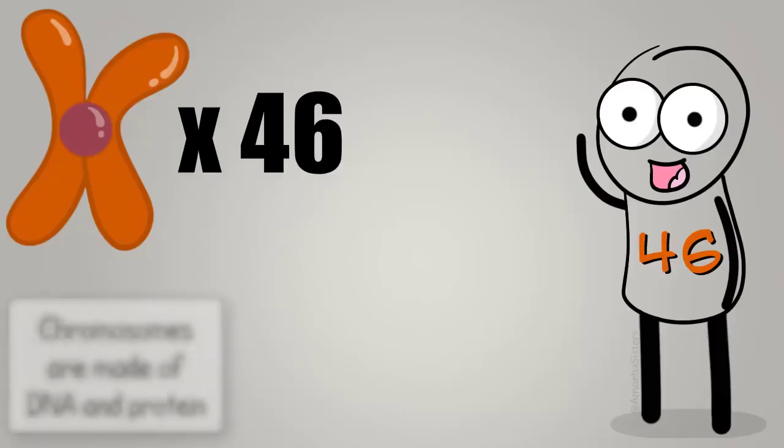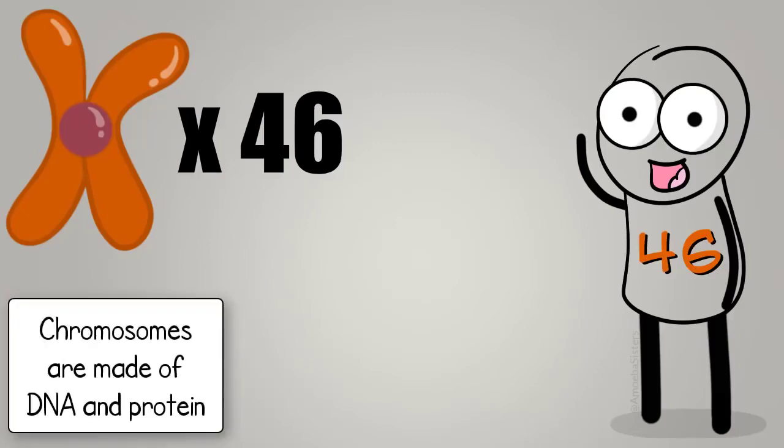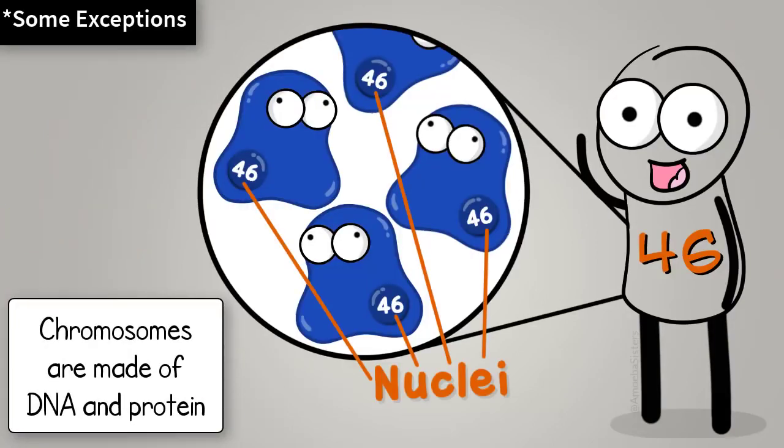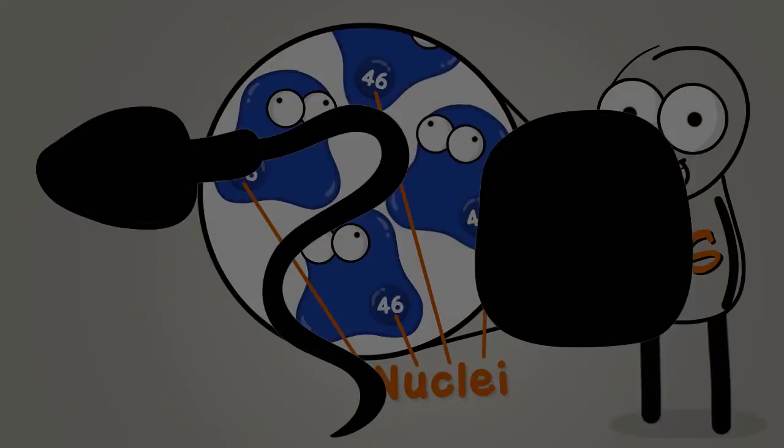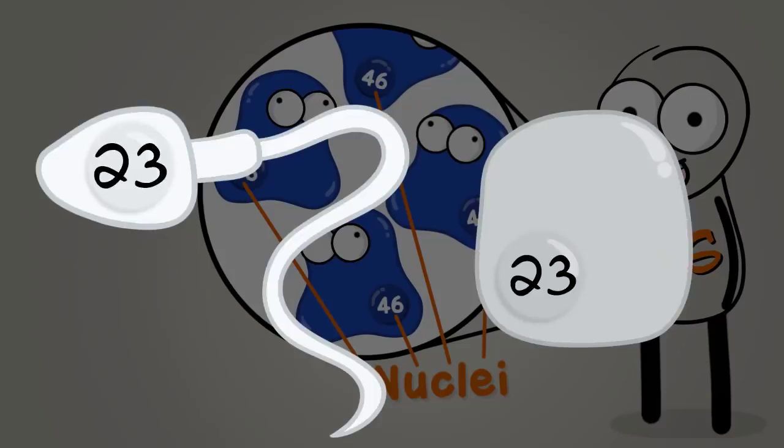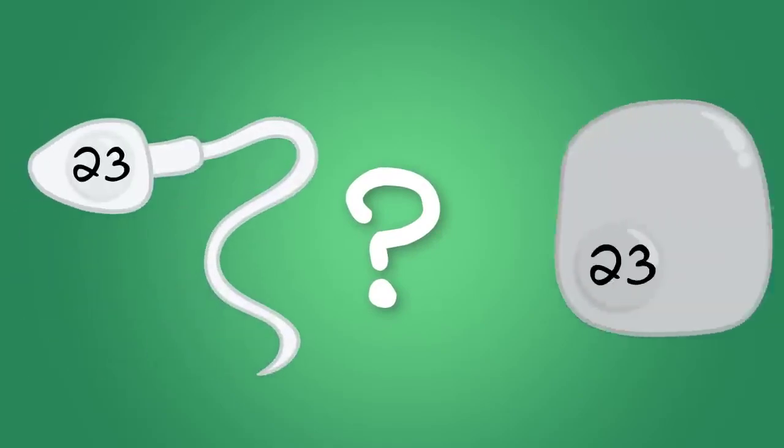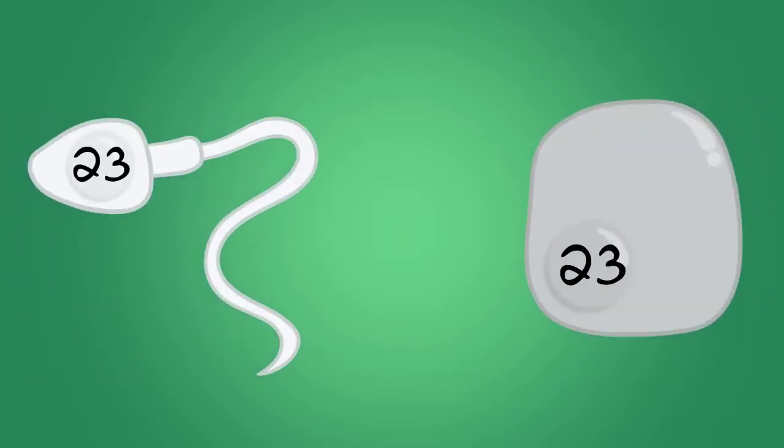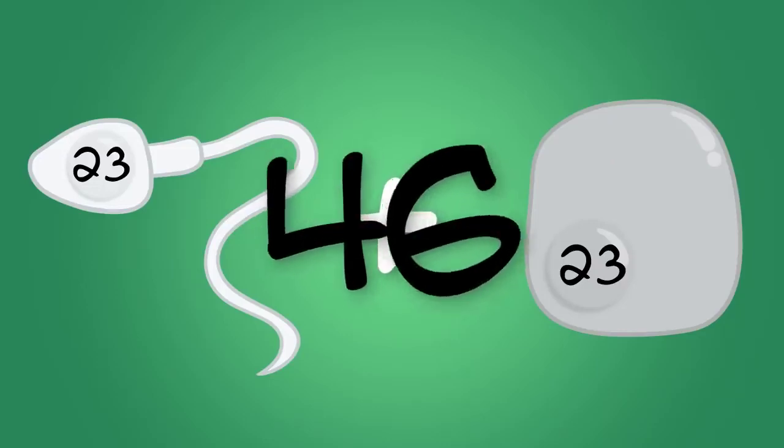You might recall that humans have 46 chromosomes. That's how many chromosomes most body cells in your body have. But there are some human cells that don't have 46 chromosomes. Human sperm cells and egg cells have 23 chromosomes. Why the number difference? Well if a sperm cell has 23 chromosomes and an egg cell has 23 chromosomes, when they come together that makes 46 chromosomes.